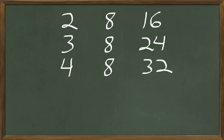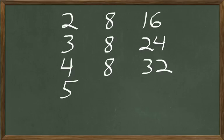In our next problem, we're walking down the street and we pass 5 houses. All 5 houses have the same number of windows — 8 windows in each of those 5 houses. How many windows are in all of those houses? If each house has 8 windows and we've got 5 houses, we're going to multiply 5 times 8. 5 times 8 are 40 windows.